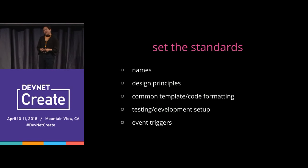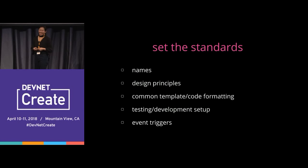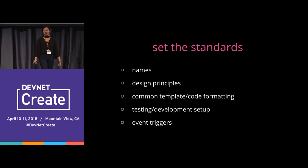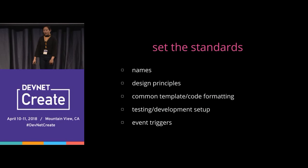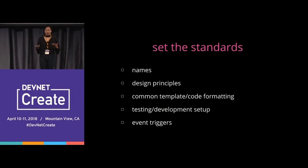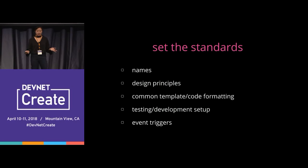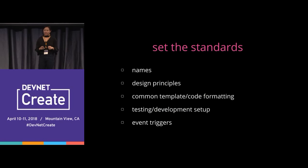Common template and code formatting is very important — nothing is more frustrating than spaces versus tabs. Testing and development setup also matters; as part of a team norm with a client, we have a norm that says everything done against infrastructure is done in a container, which we've implicitly agreed on.